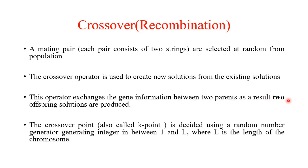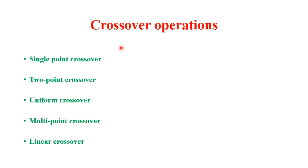As a result of crossover, we get two offspring. To perform crossover, we select a crossover point K, which is generated by a random number generator. This crossover point K lies between 1 and L, where L is the length of the chromosome. Various crossover operations include single-point, two-point, uniform, multi-point, and linear crossover.